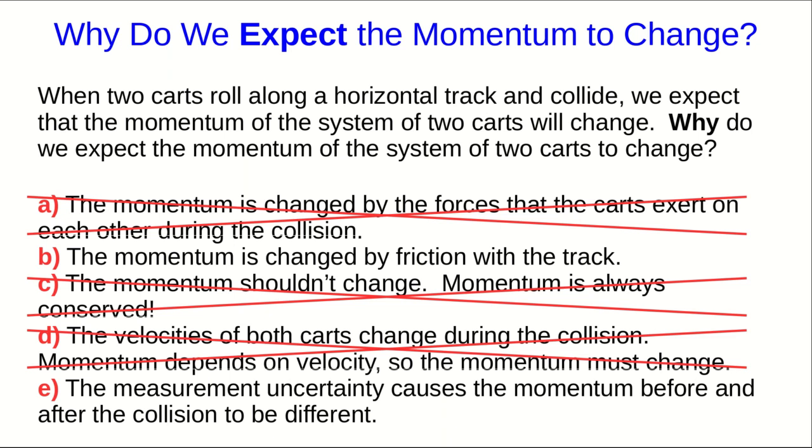And D is missing the whole point of momentum. There are an infinite number of ways the velocities of both carts could change, but conservation of momentum sort of magically chooses one of the ways which allow the momentum to not change even though both velocities do change.